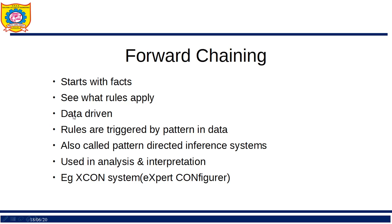In forward chaining, rules are triggered by patterns in the data. If a particular pattern is found in the database, a particular action is taken. This approach is also called a pattern-directed inference system, where pattern leads us to a conclusion.